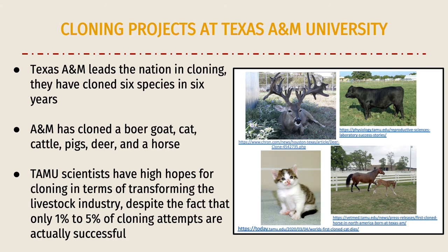Texas A&M is famous for its research in cloning. In fact, A&M leads the nation in the number of successful cloning projects, having cloned six species in six years. They've cloned cattle, pigs, deer, a Boer goat, a horse, and most famously, a cat named Cece. Despite their success rate of only one to five percent, Texas A&M researchers are hopeful for the future of cloning and believe it has the potential to transform the livestock industry.